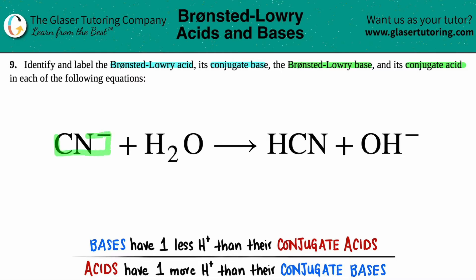CN⁻ looks very similar to which one on the product side? HCN — they both have a CN. And by choosing these two as a pair, the other ones should make sense: H₂O versus OH⁻. Those look similar too, so I picked the pairs correctly.